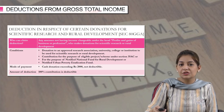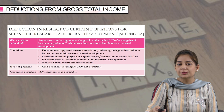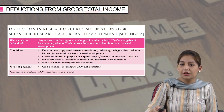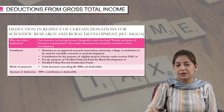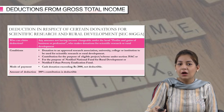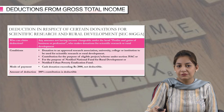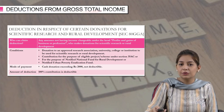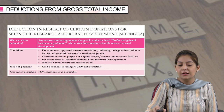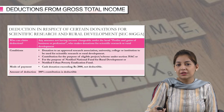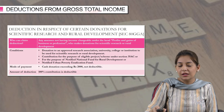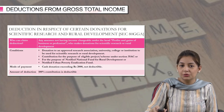For this, there are certain conditions. The donation must be made to an approved research association, university, college, or institution to be used for scientific research or rural development. Or you can also contribute for the purpose of an eligible project or scheme under section 35AC, or for the purpose of a notified national fund, rural development, or notified urban poverty eradication fund. The mode of payment can be cash, cheque, draft, or online payment. If donating in cash, there is a ceiling of rupees 2,000 — if it exceeds 2,000, the deduction will be restricted to 2,000 only.